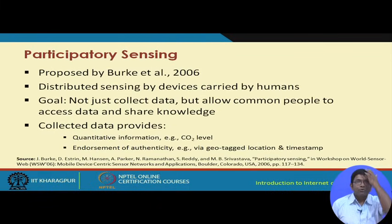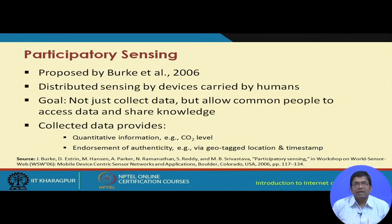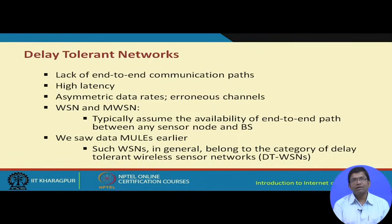The concept of participatory sensing was proposed by Burke et al. in 2006, so it is a relatively recent concept. It focuses on distributed sensing by devices carried by humans, with the goal not just to collect data but to allow common people to assess and share knowledge. Delay tolerant networks are relevant here, as sensed data may take considerably longer to be delivered compared to regular transmission times.